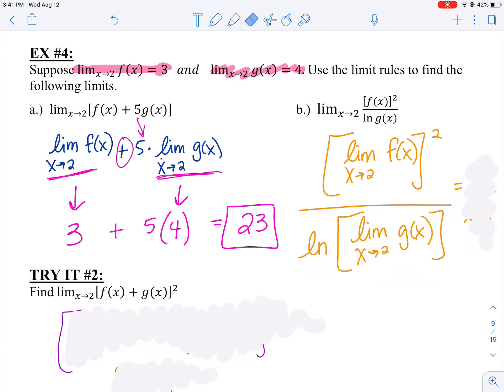On the bottom, I can figure out what the limit is as X approaches two of G(X), and then apply the natural log. Let's do that. So what is the limit as X approaches two of F(X)? Three, right? And then three squared is nine. So my numerator is nine.